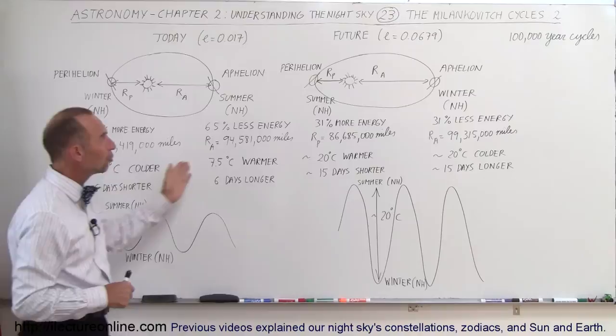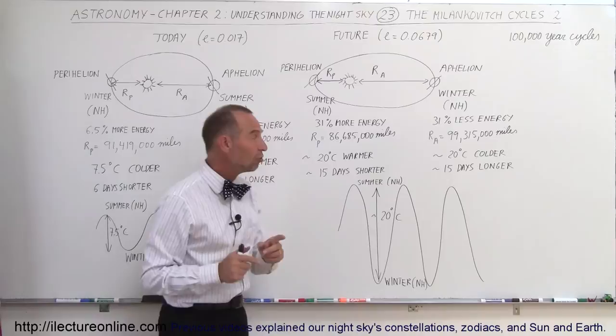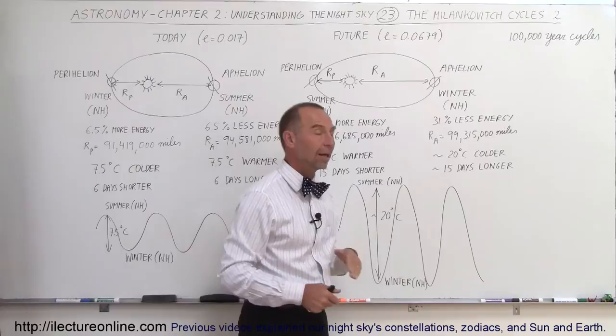Well, at some point in the future, the eccentricity will go all the way to its maximum value of 0.0679, which means that we're significantly closer at perihelion and significantly farther at aphelion.